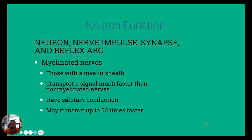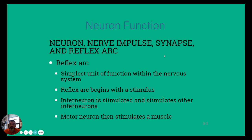There are a lot of myelinated nerves — very difficult to say, obviously — so they have a myelin sheath, and this is what transports that signal really quickly. There are obviously some non-myelinated nerves, but whenever we have that myelin sheath, that neuron signal can be transferred very, very quickly — up to about 50 times faster.